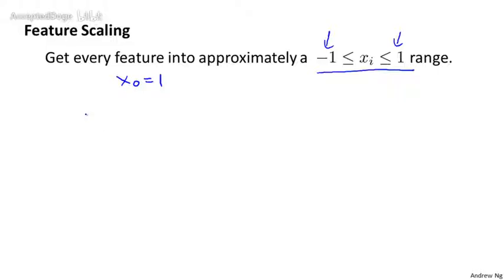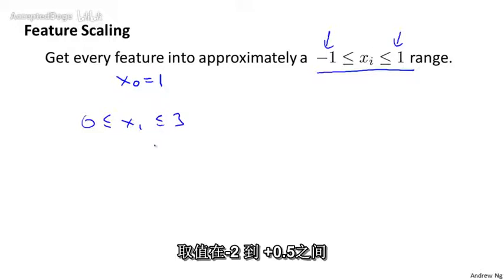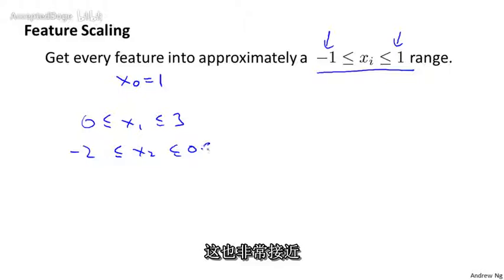So if you have a feature, x1, that winds up being between 0 and 3, that's not a problem, or if you end up having a different feature that winds up being between -2 and +0.5, this is close enough to -1 and +1 that that's fine.